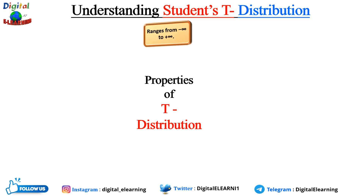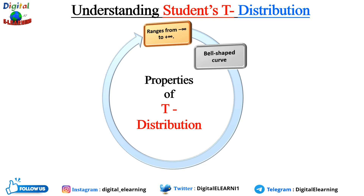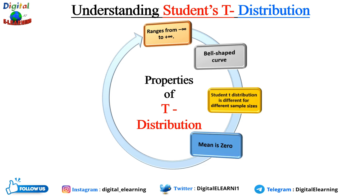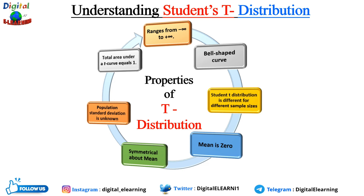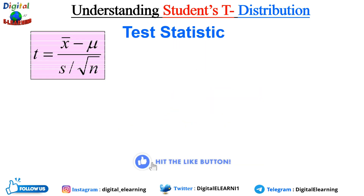Some properties of the t-distribution: it ranges from minus infinity to plus infinity; it has a bell-shaped curve and is symmetric, similar to the normal distribution; the t-distribution differs for different sample sizes; the mean is zero, much like a standard normal distribution; the population distribution is symmetrical about the mean; the population standard deviation is unknown; and the total area under the t-curve equals one.